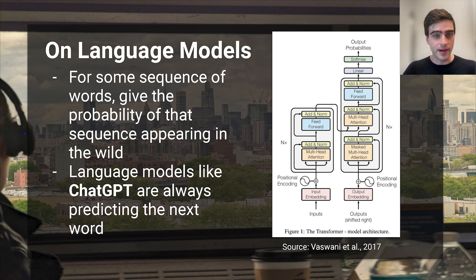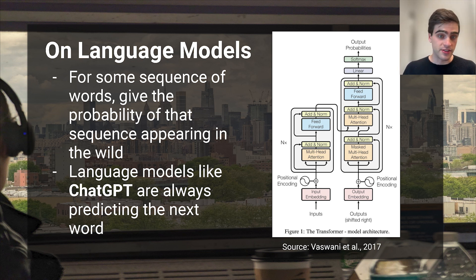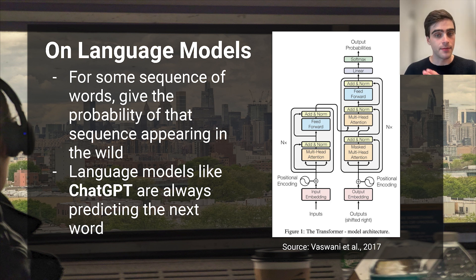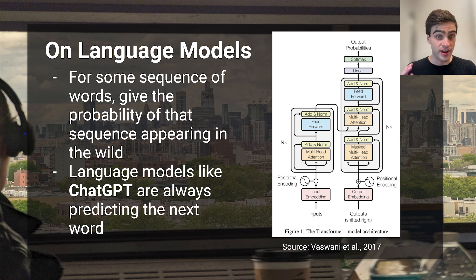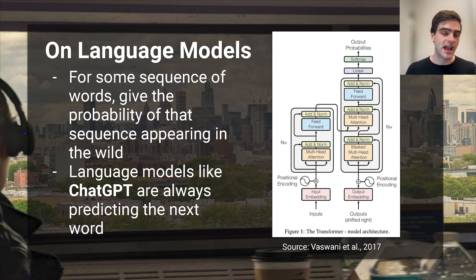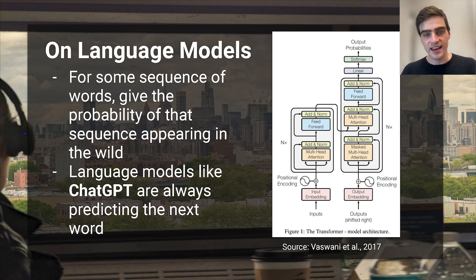For example, 'United States of America' is a very common sequence of words. It's more common than 'United States of pizza' or 'United States of Canada.' In understanding that 'United States of America' is more common than pizza or Canada, we're implicitly saying that 'America' is more likely to follow 'United States of' than 'pizza' or 'Canada' is.